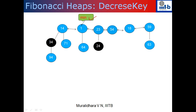The root list is the actual linked list that keeps track of the roots of the trees. To repeat the algorithm: after I decrease the key, if there is no violation of the heap property, you do nothing. If there is a violation, you cut the node and add it to the root list. If the parent node is unmarked, you mark it and stop. If the parent node is marked, you cut that node, add it to the root list, unmark it, and keep going to the parent repeating the same process. The algorithm terminates either when you reach the root list or when you reach an unmarked node — in which case you mark it and stop.